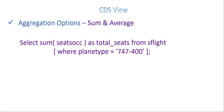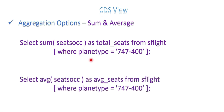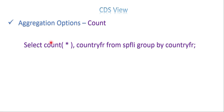SUM and AVERAGE are pretty simple. SELECT SUM(field) or AVG(field) FROM the table, with an optional WHERE condition. The same options apply for average as well.